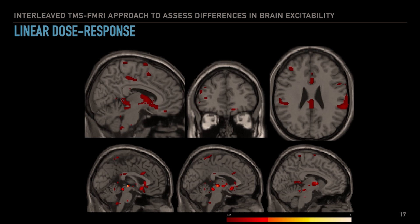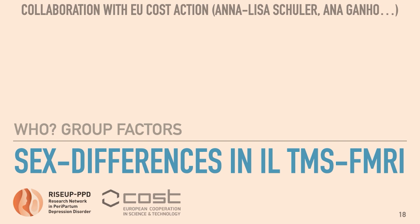Applying voxel-wise linear regression, we can identify the regions showing the most linear dose-response effects — the higher the stimulation intensity, the more BOLD response we get there. These regions nicely include the subgenual ACC as the most relevant indirect stimulation target, which is also the target used for deep brain stimulation, as well as the DLPFC and other hubs of the network around the SGA-CC anti-correlation.